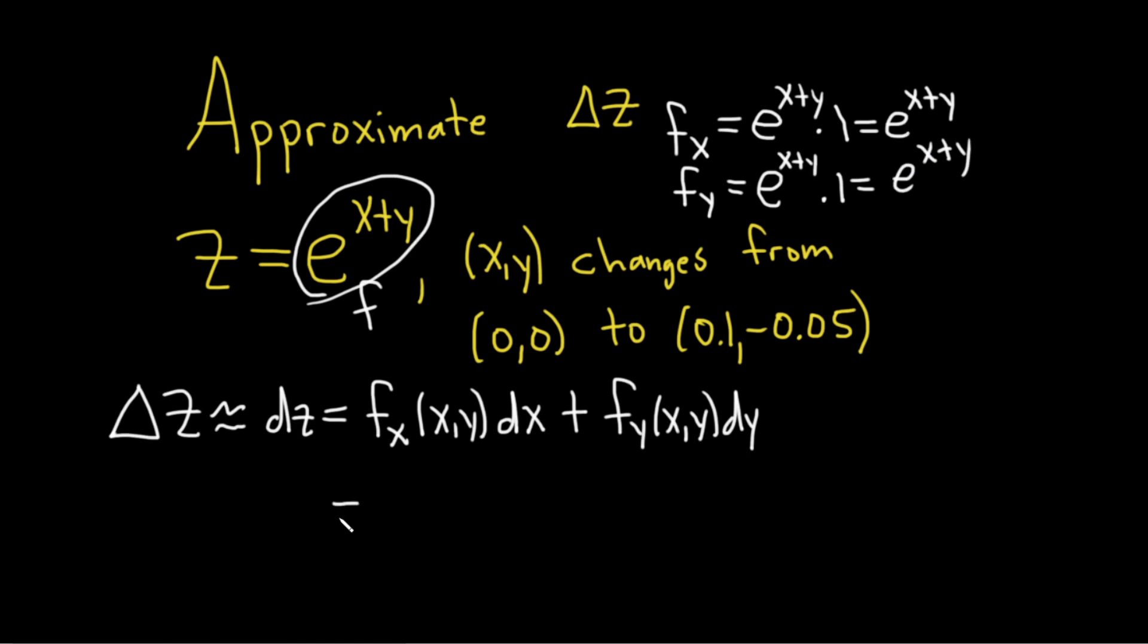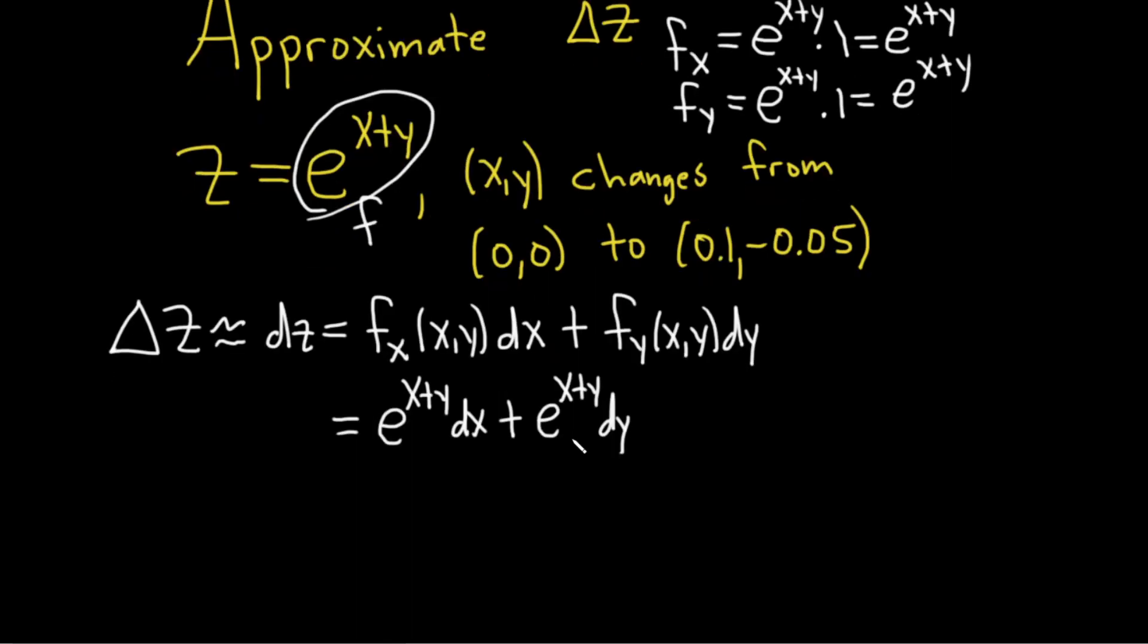Let's go ahead and plug everything in here. So this will be e to the (x+y) dx plus e to the (x+y) dy. Okay, so now we're good to go. Now we just have to plug everything in. I should mention that the x and y are (0,0) here. Really important. It's where you start always.